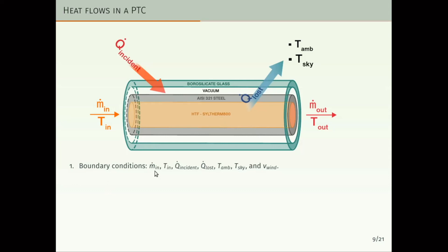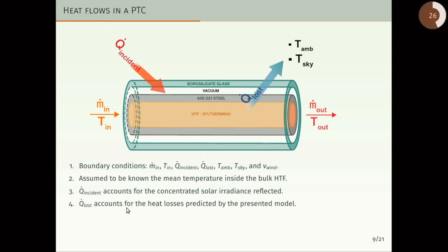The boundary conditions for our model are the inlet mass flow rate, inlet temperature, Q dot incident, Q dot lost, ambient and sky temperatures, and wind velocity. We assume to know the mean temperature inside the bulk, so we assume for a central control volume to have a known mean temperature. Q dot incident accounts for the concentrated solar irradiance reflected. This solar irradiance is coming from the parabolic mirror, and Q dot loss accounts for the heat losses predicted by the presented model.